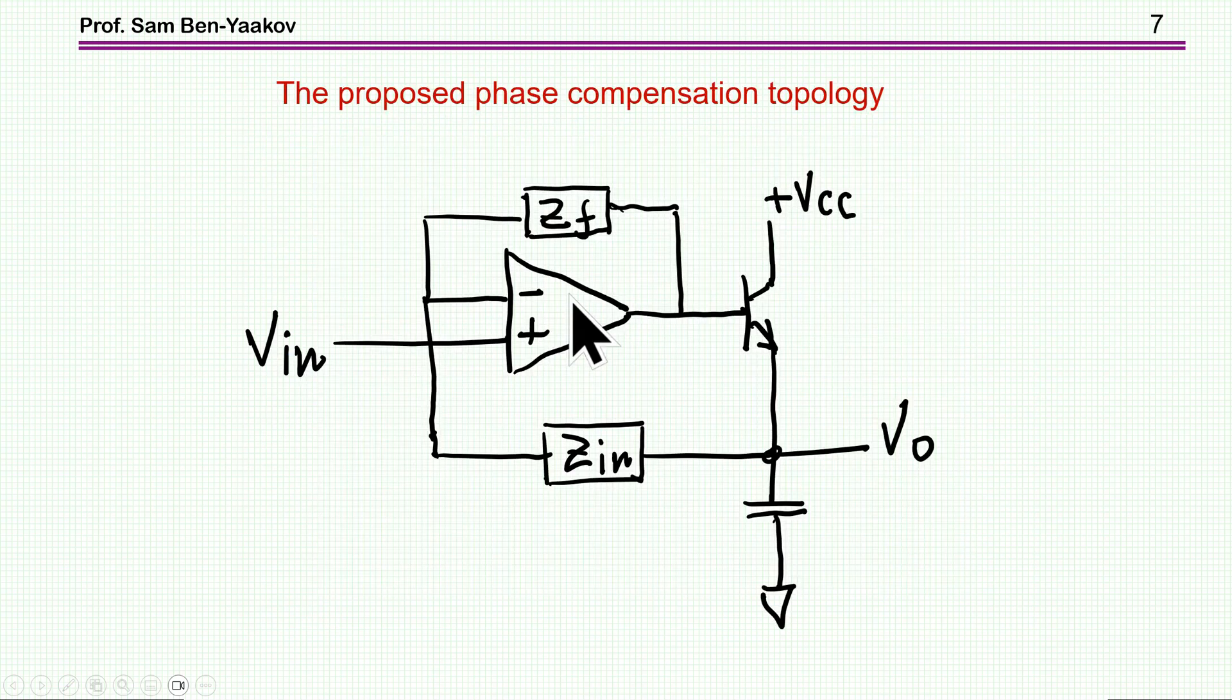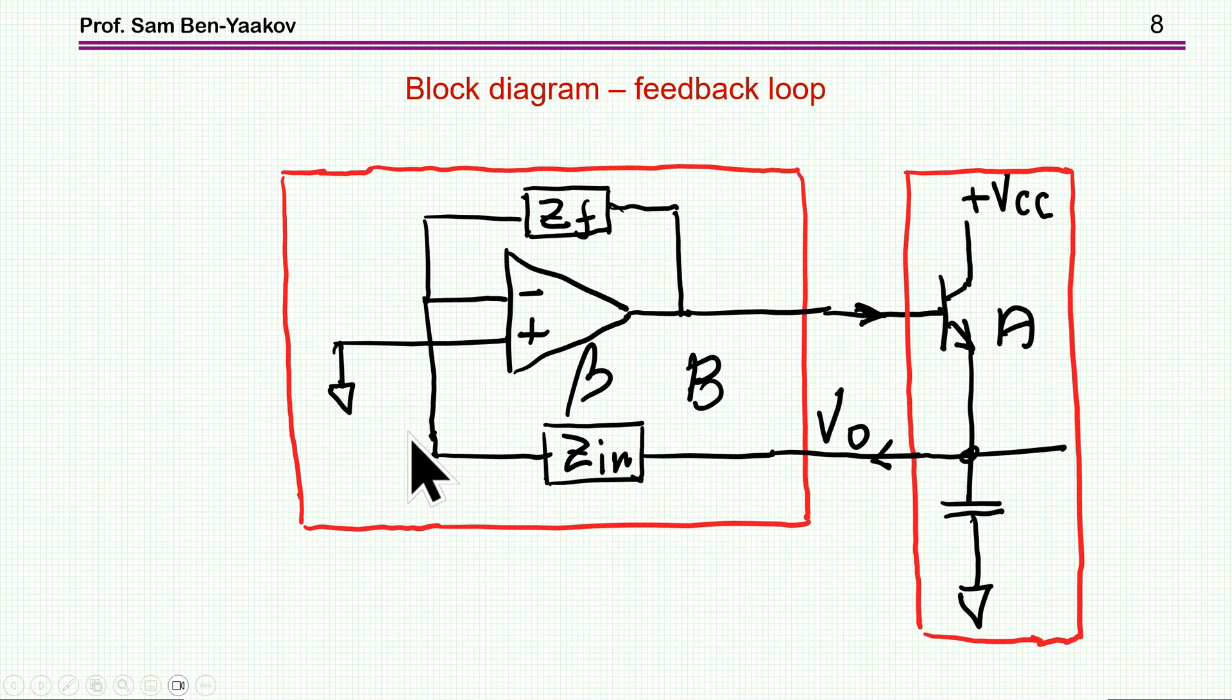Now, the topology that I am going to explore and the approach that I am showing here is using this type of a feedback around the operational amplifier. This actually makes the operational amplifier work in closed loop. This is the idea here, such that here we have a controlled transfer function in terms of gain and phase. So, we can match it to what is available here at the BJT section. So, it's to make the whole system stable with a phase margin that we want and a bandwidth that we can get.